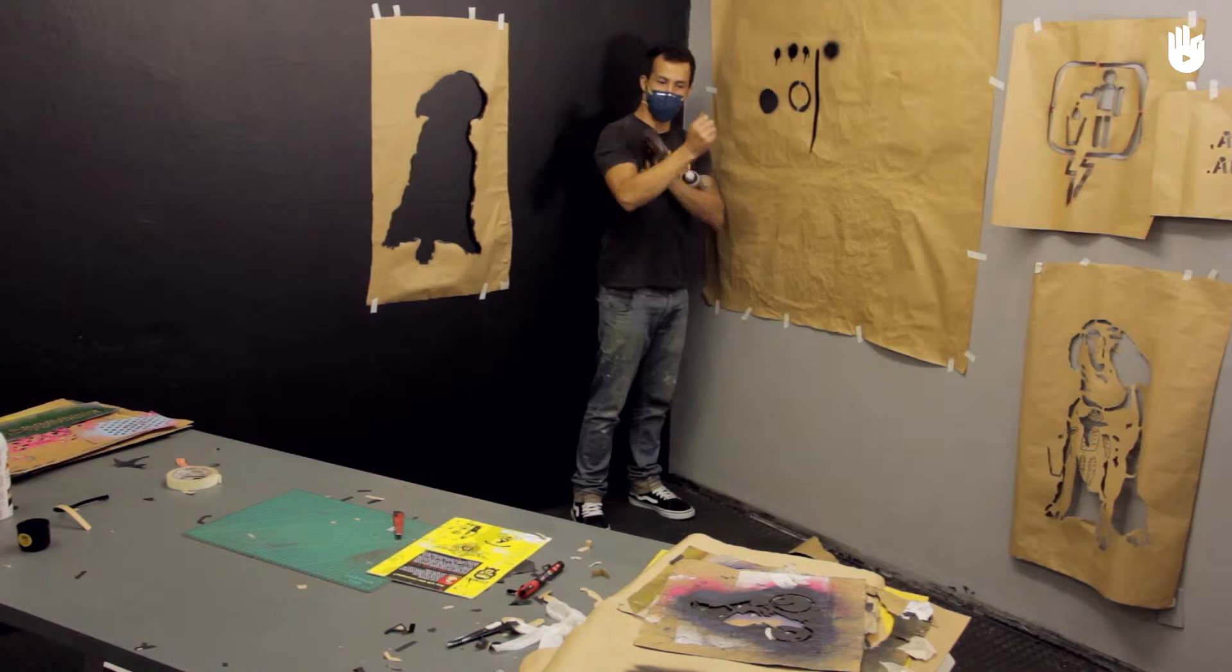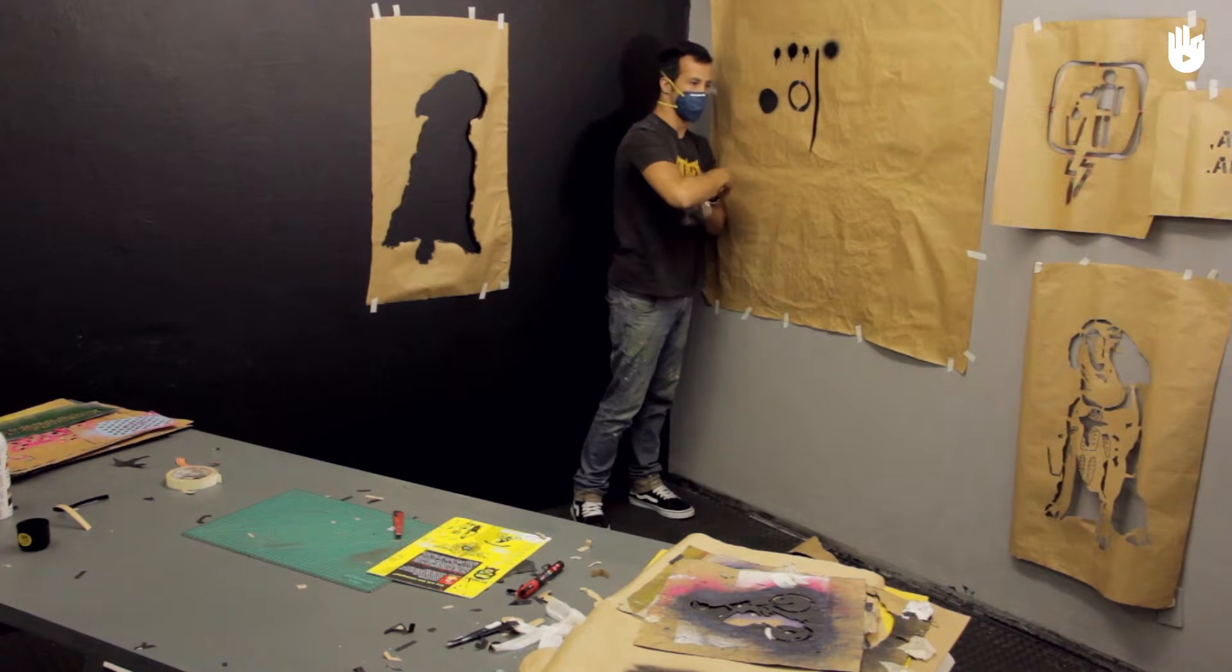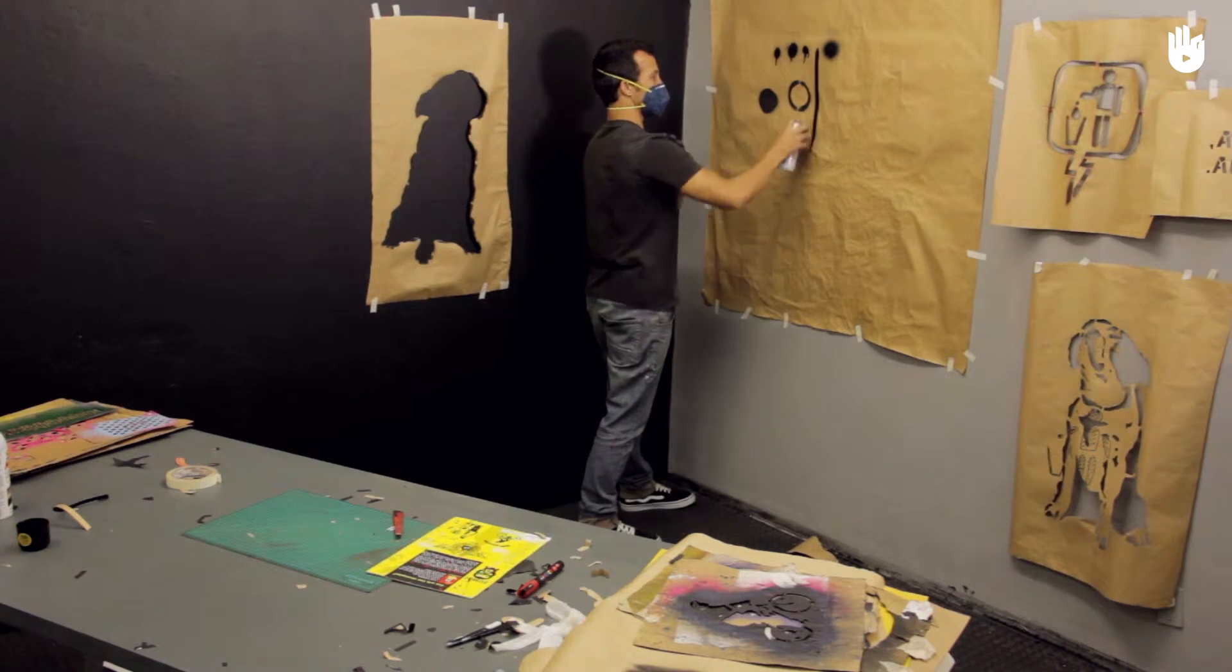The movement of your arm should come from the shoulders, from top to bottom, and not from the wrist. Your movements should be large, like this.